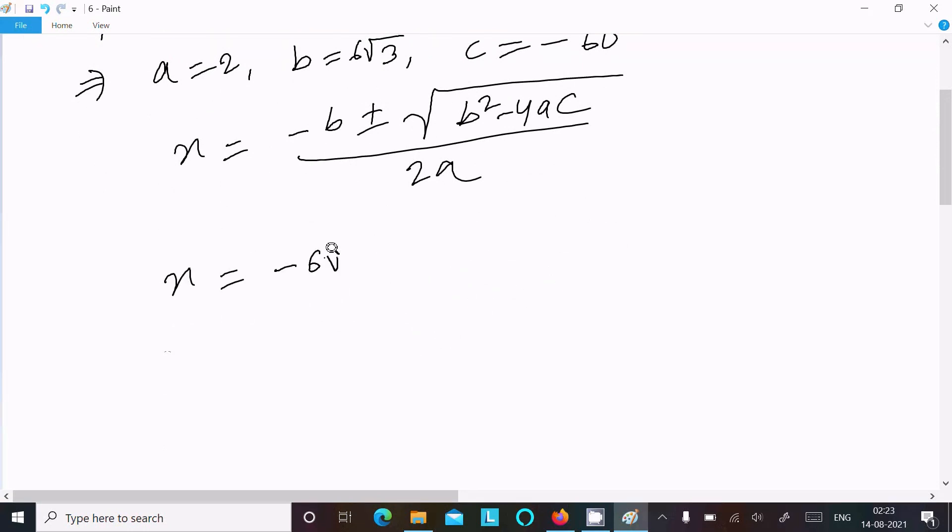Now here writing x = -b, which is -6√3, plus or minus the square root of b², which is (6√3)², minus 4 times 2 times -60, divided by 2a, which is 2 times 2.